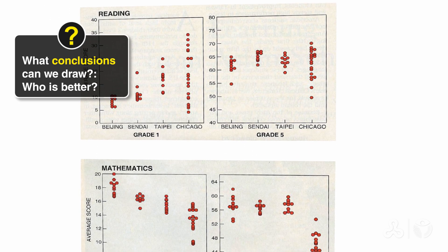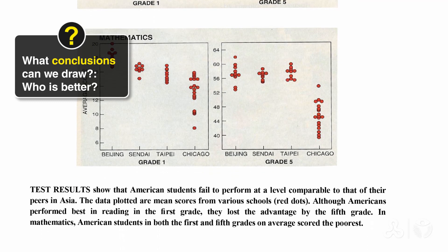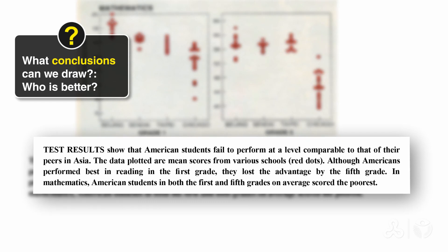If we are still unclear about this, let's look at the explanations again. The third sentence begins, although Americans performed best in reading in the first grade, they lost the advantage by the fifth grade. So now things are becoming clear.